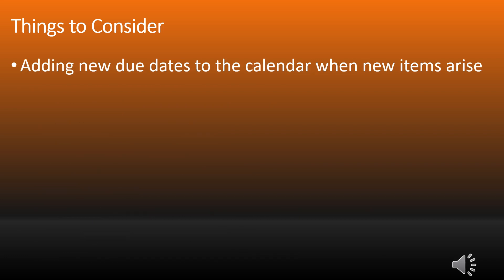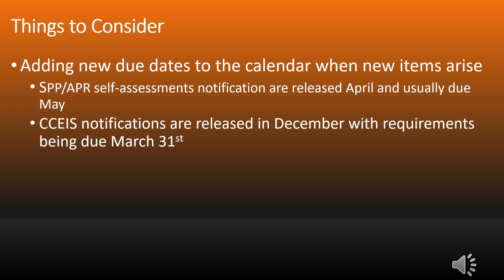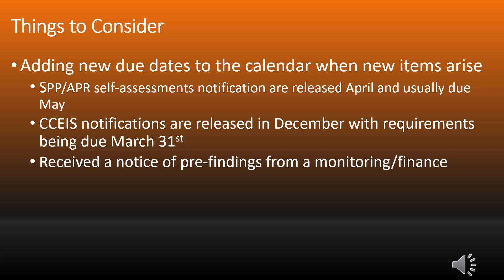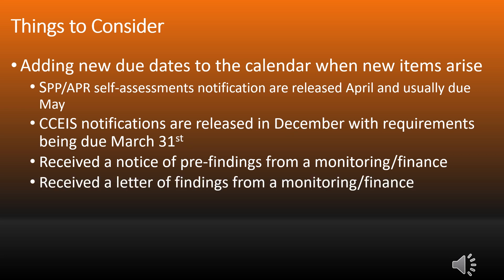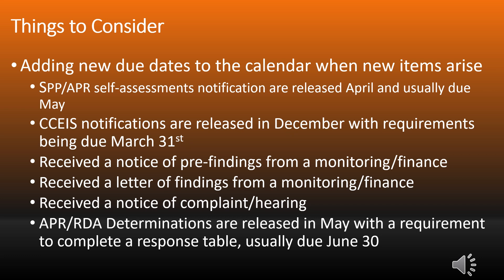Also, add new dates to the calendar when new items arise. The SPP-APR self-assessment notifications are released in April and usually are due in May. CCEIS notifications are released in December with requirements being due March 31st. If you received a notice of pre-findings from monitoring or finance, a letter of findings from monitoring and finance, or a notice of a complaint or hearing — your annual performance report results-driven accountability determinations are released in May with a requirement to complete a response table, usually by June 30th.